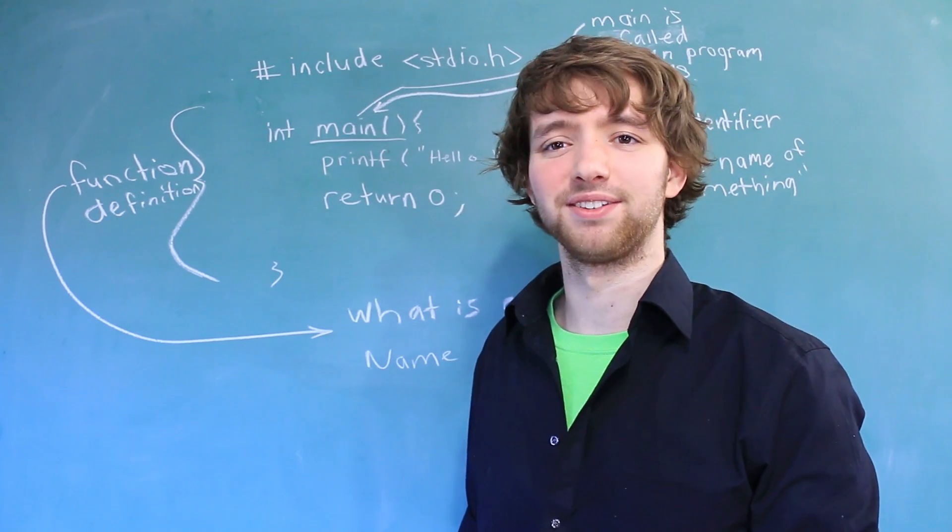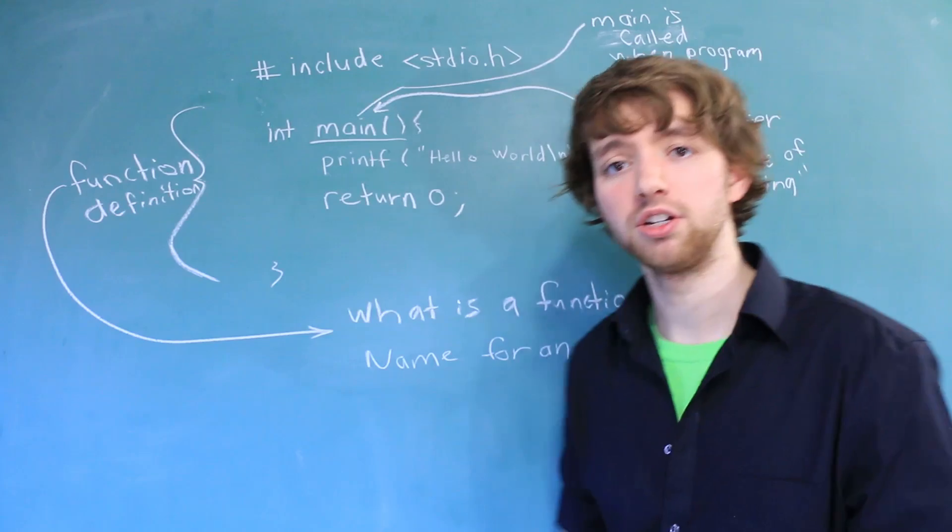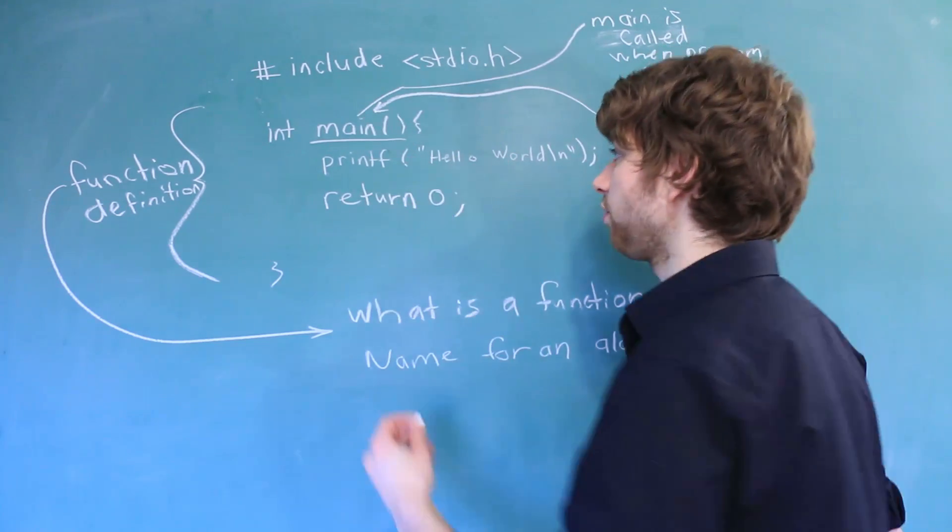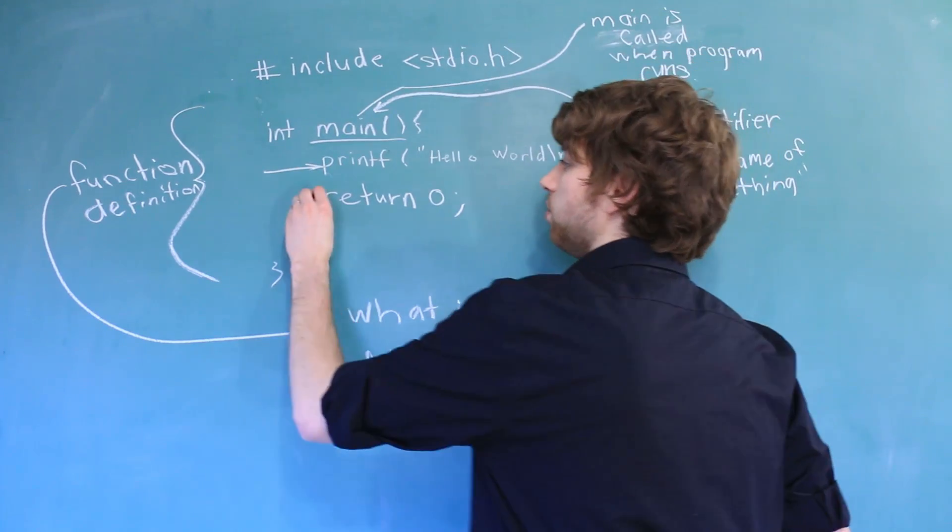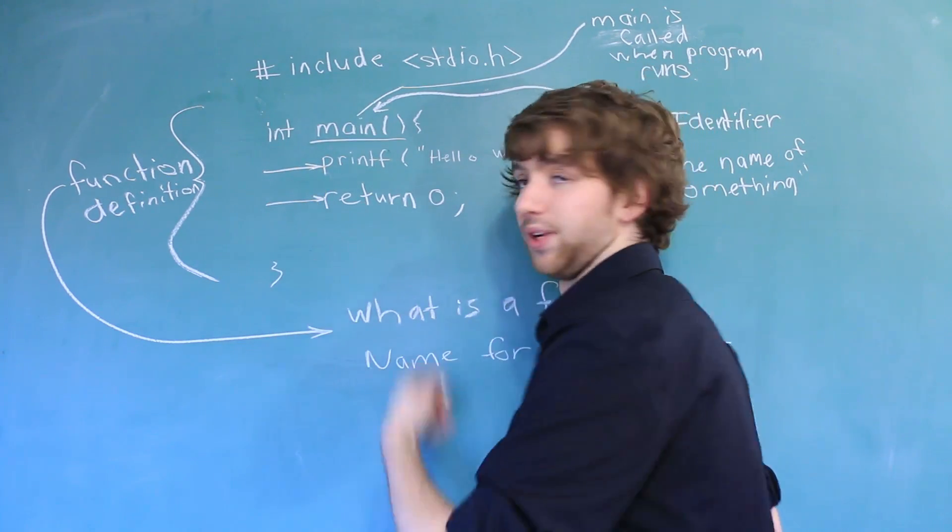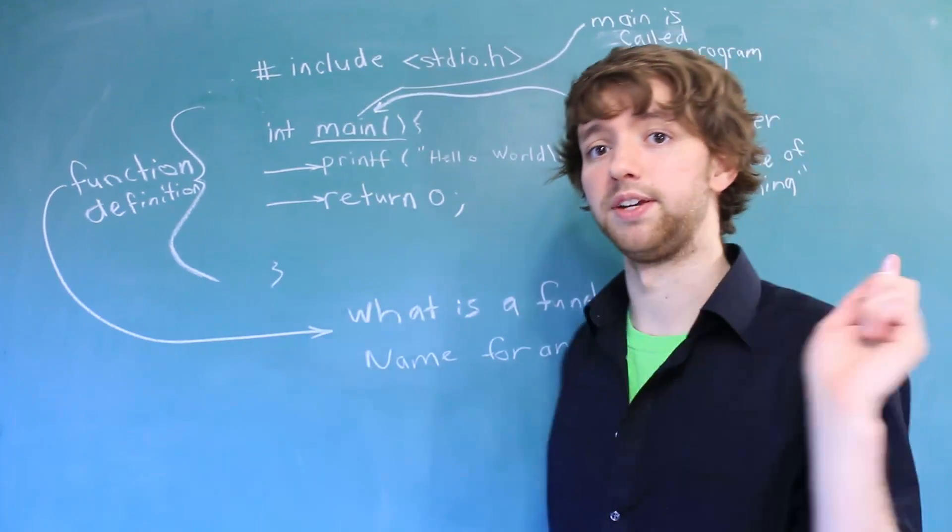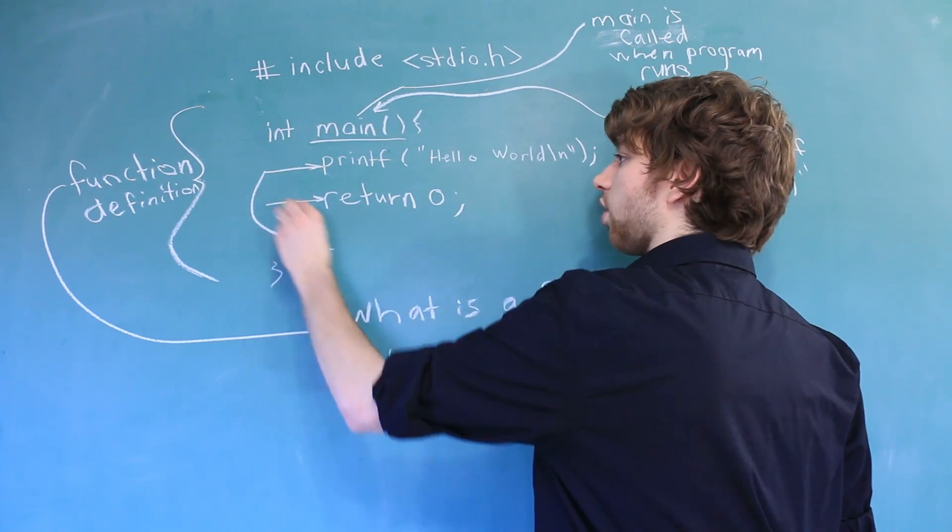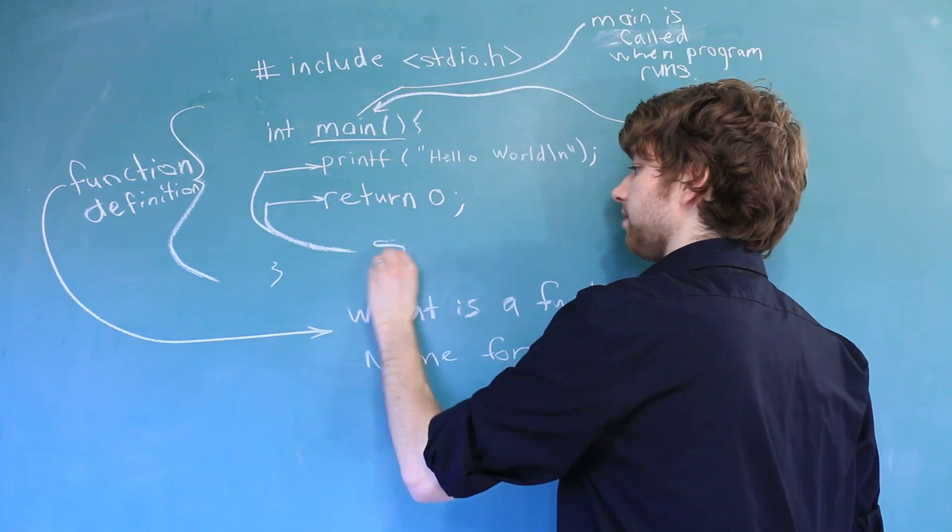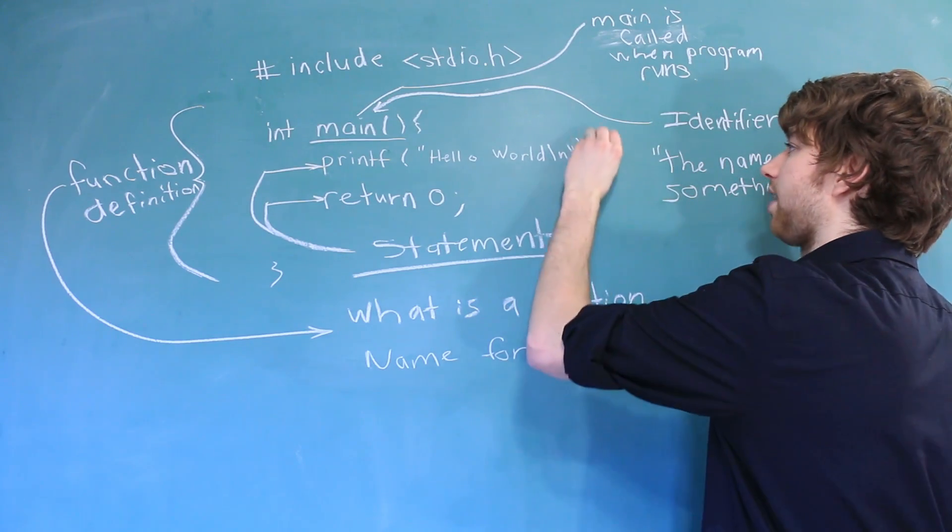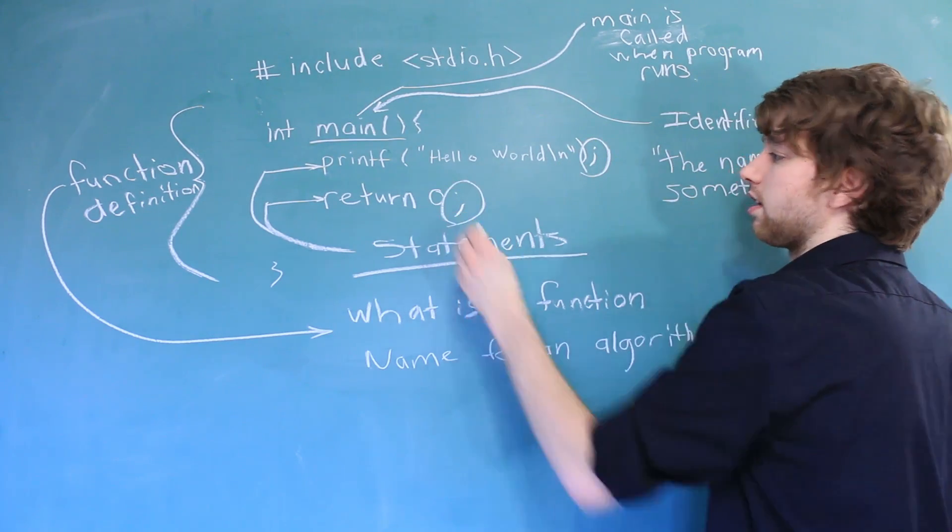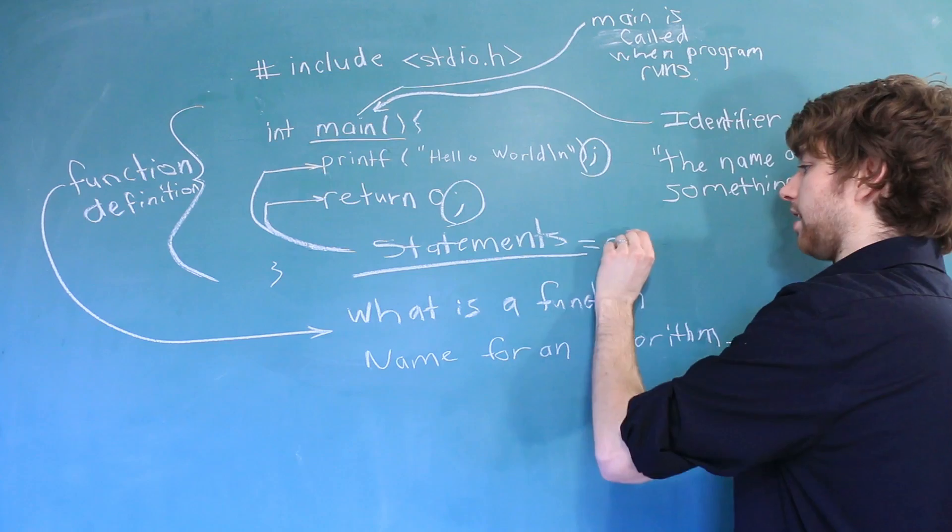Inside of our function, we have each thing we want to do. The first thing we want to do is print something, and then the next thing we want to do is return something. We discussed what the return means in the previous video. Both of these are examples of statements. You can clearly see that they're statements because they both have semicolons. You can think of statements as commands.